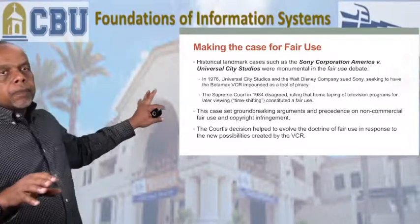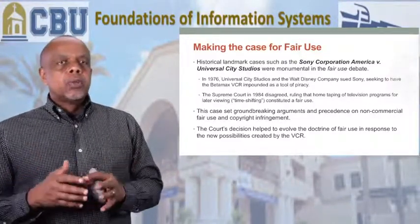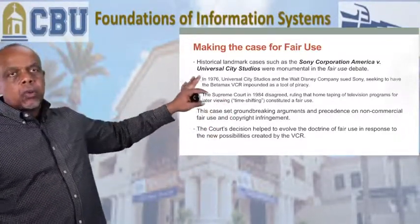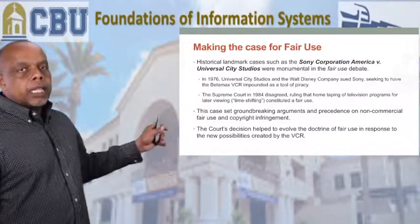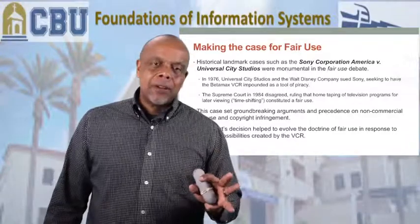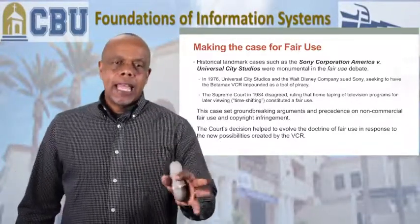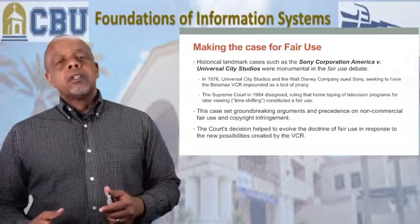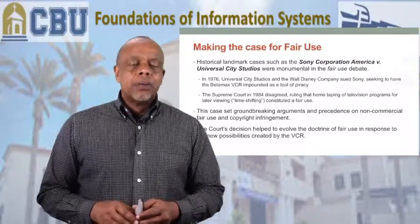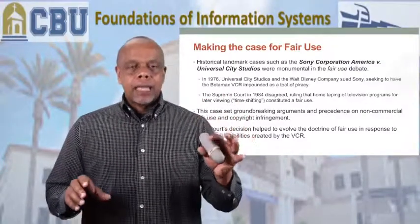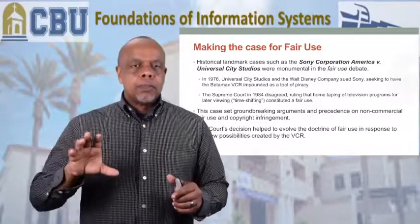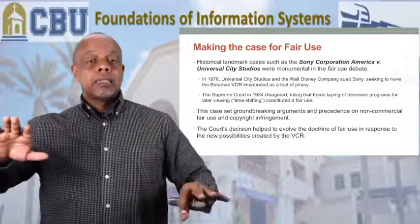Another historical landmark case was Sony versus Universal City Studios. In 1976, Universal City Studios and Walt Disney sued Sony, seeking to have the Betamax VCR impounded as a tool of piracy. A lot of you probably never heard of Betamax — there were two competitive brands, VHS and Betamax. Sony produced the Betamax; a plethora of other companies produced VHS. VHS won out, which is why Betamax didn't get much play time, but Betamax was actually on the scene first. It was a VCR — a video cassette recorder — and Sony got sued because you could record live TV programming, which they claimed was piracy.